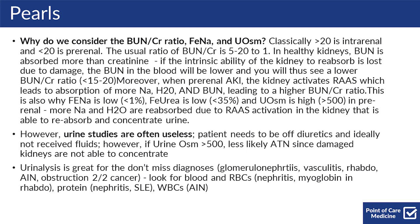Moreover, when you have a pre-renal AKI, the kidney activates RAS, which leads to absorption of more sodium, water, and BUN, leading to a higher BUN to creatinine ratio. This is also why the fractional excretion of sodium is low — less than 1% — the fractional excretion of urea is low — less than 35% — and the urine osm is high, usually over 500, in pre-renal physiology, because more sodium and water are reabsorbed due to RAS activation in a kidney that's able to reabsorb and concentrate the urine.